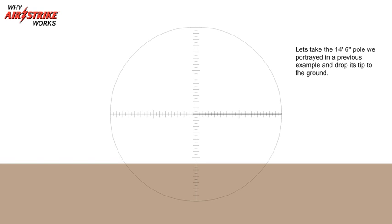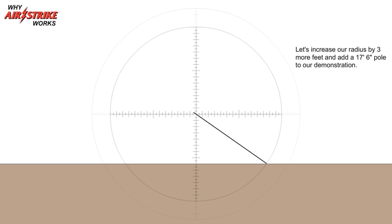Let's take the 14-foot 6-inch pole we portrayed in a previous example and drop its tip to the ground. Let's increase our radius by 3 more feet and add a 17-foot 6-inch pole to our demonstration.